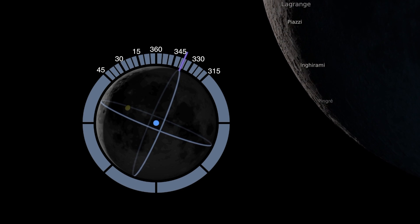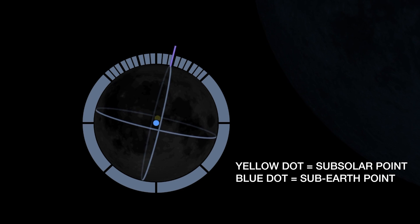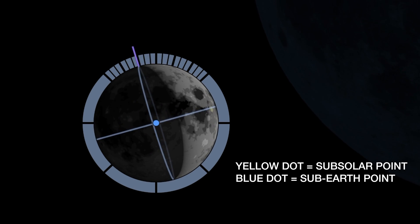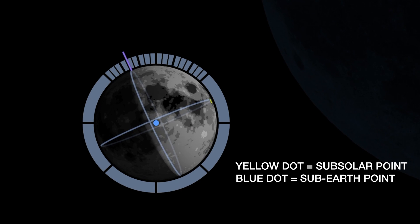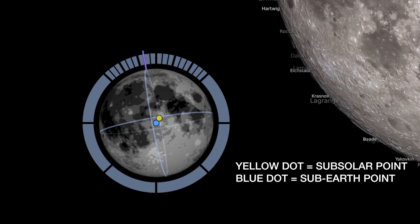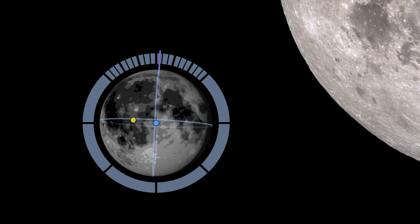The yellow and blue dots are the sub solar and sub earth points and that's useful information if you're standing on the moon. You know exactly where the Sun and the earth are above you or where you have to be for them to be directly 90 degrees above you.